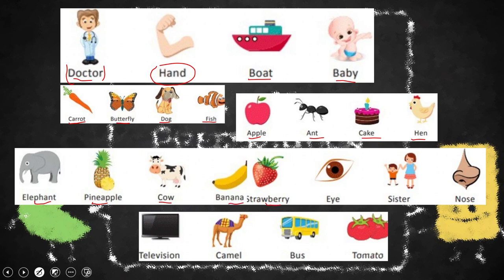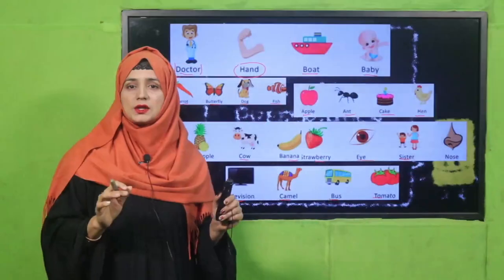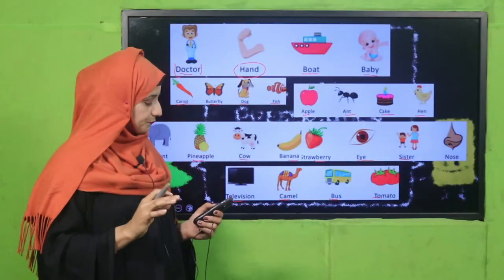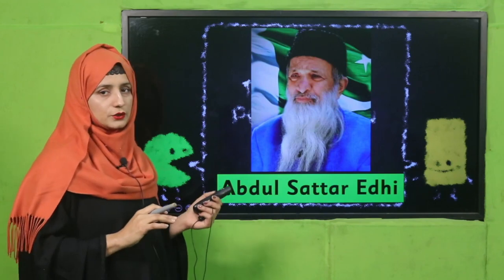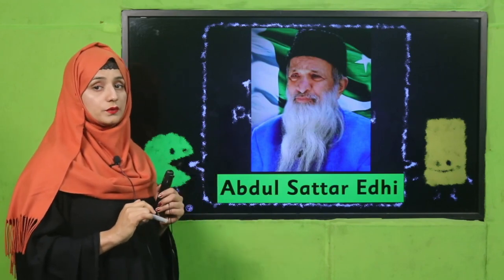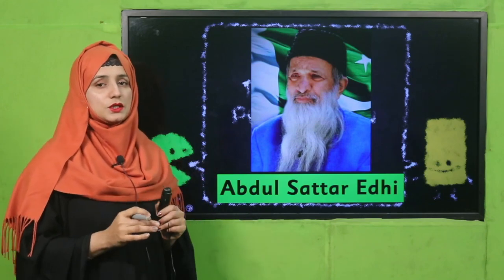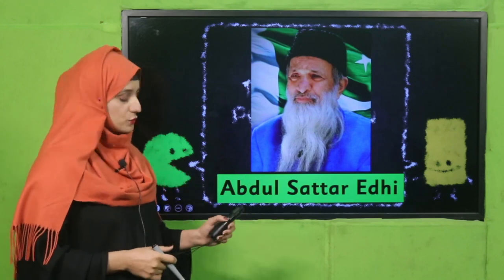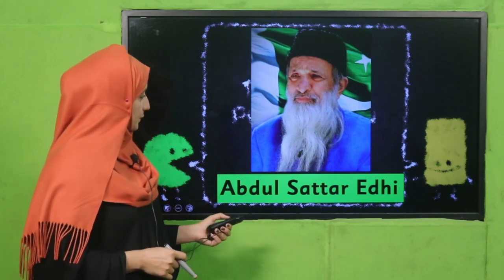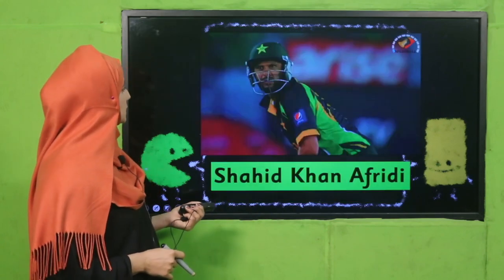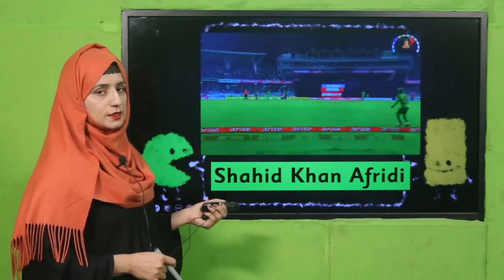Cow, banana, strawberry, eye, sister, nose — all parts of the body are called naming words. Television, camel, birds, tomato — these are a few examples, but everything that has a name is a naming word. Here you can see Abdul Sattar Edhi — do you know him? He was a great social worker who did many things for humanity and served people with great kindness.